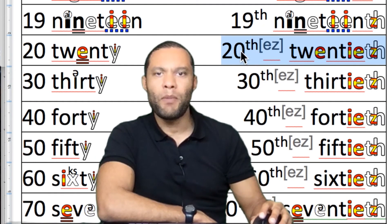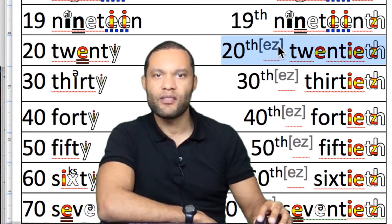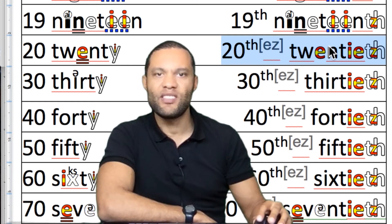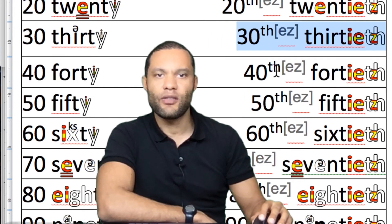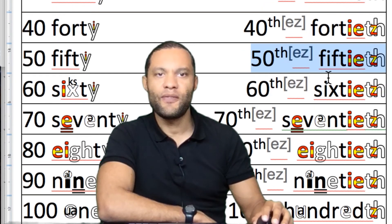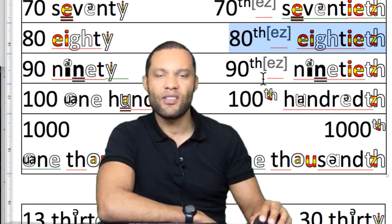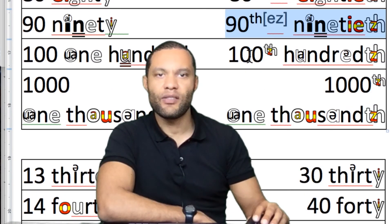Nineteenth, twentieth. Now multiples of ten have this '-ieth' sound. So we've got twentieth, but nineteenth. Then: twentieth, thirtieth, fortieth, fiftieth, sixtieth, seventieth, eightieth, ninetieth.